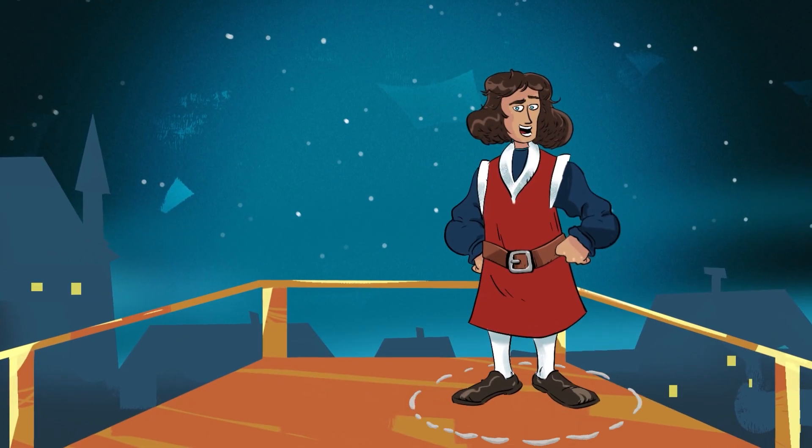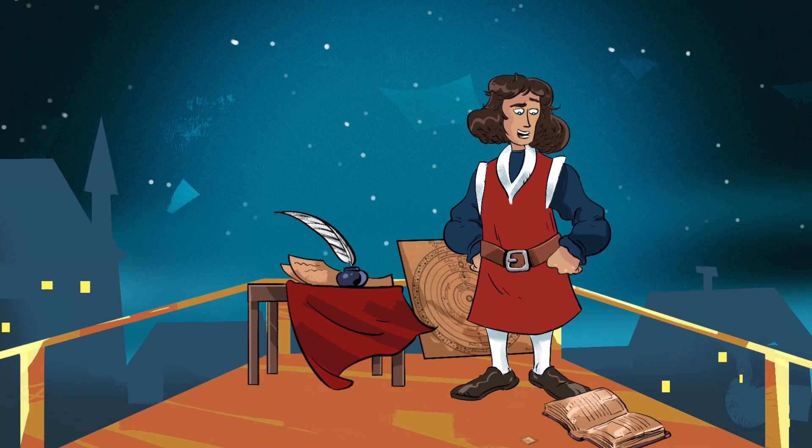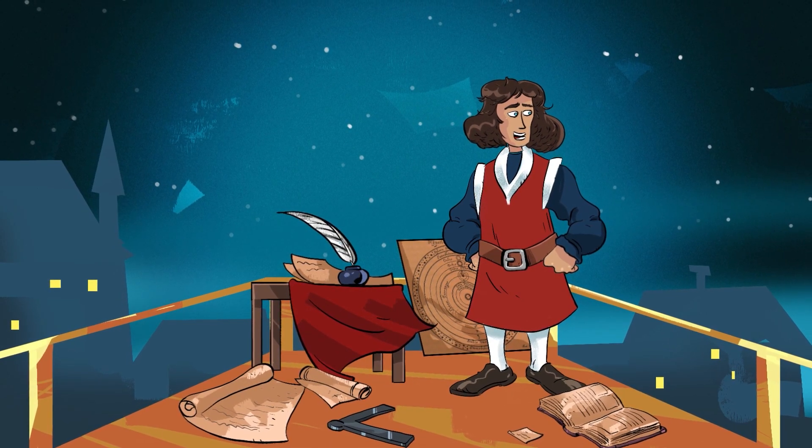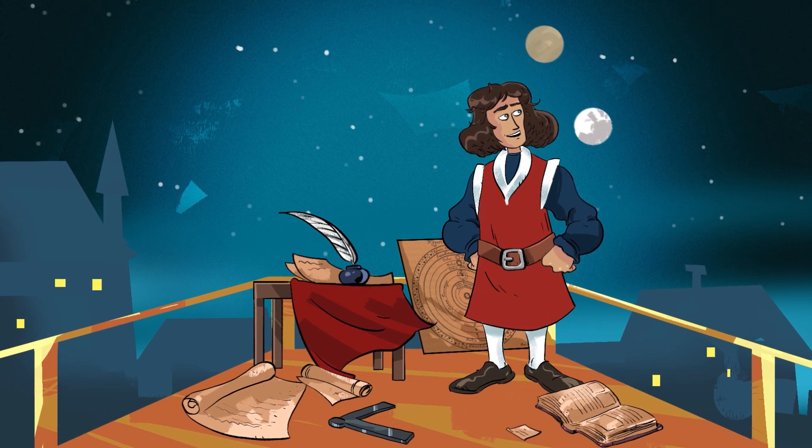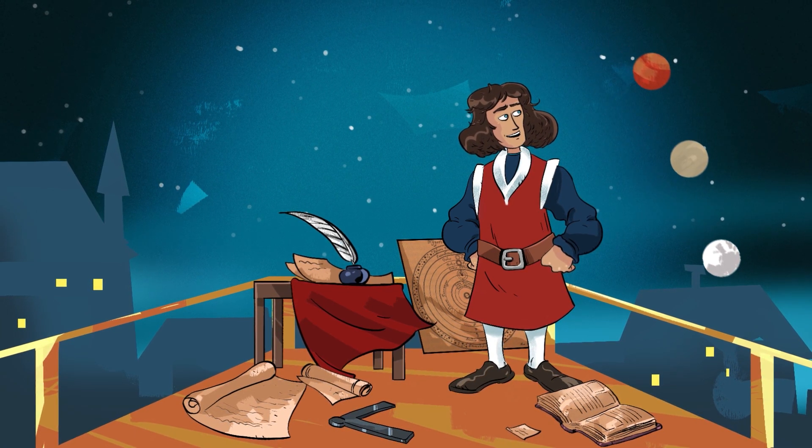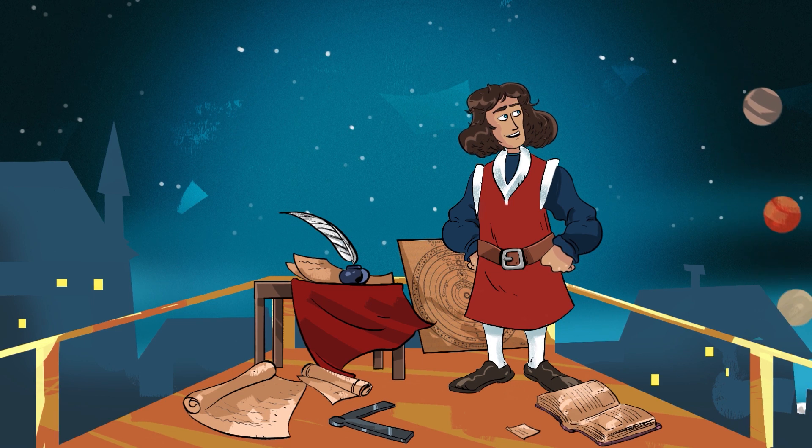He purchased one of the city towers in Frombork and turned it into his astronomy workshop. He added a wooden platform to the tower and spent his nights staring at the sky. He observed the placing of the planets and stars with great focus.